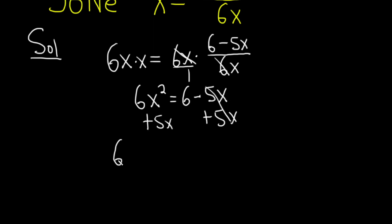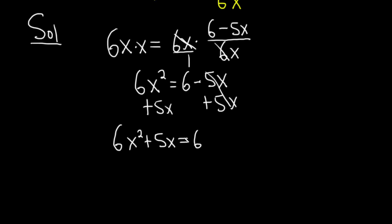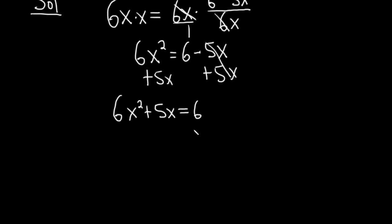So we have 6x squared plus 5x, and that's equal to 6. Okay, almost there. Now we'll subtract 6. We have 6x squared plus 5x minus 6, and that's equal to 0.